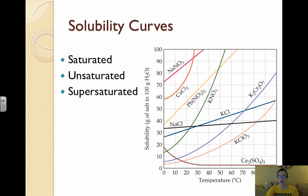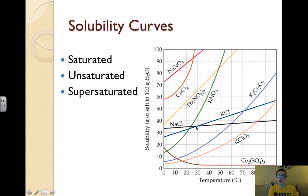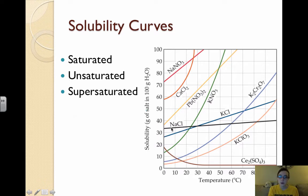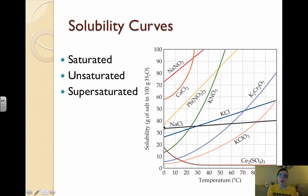Along with solubility, we're going to look at solubility curves. A solubility curve shows where a solution is saturated, unsaturated, or supersaturated. Any point on the curve represents where a solution is saturated. If we look at the line for sodium chloride, at any given temperature we can tell if the solution is saturated. For a saturated solution at 20°C, we follow 20°C up to the line — sodium chloride would be saturated at 35 grams of NaCl in 100 grams of water at 20°C.